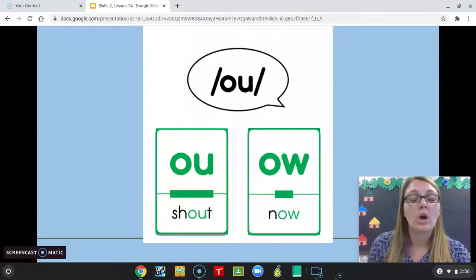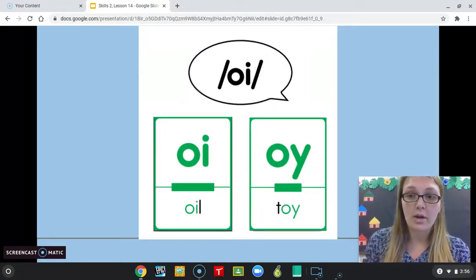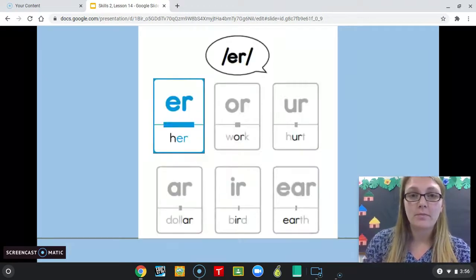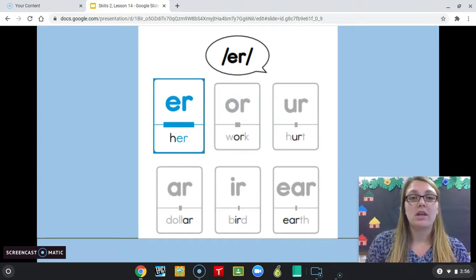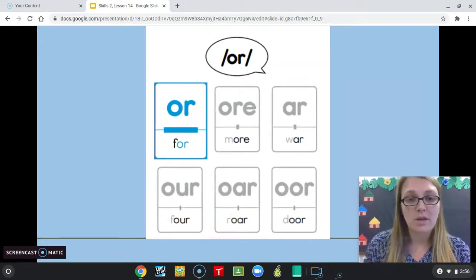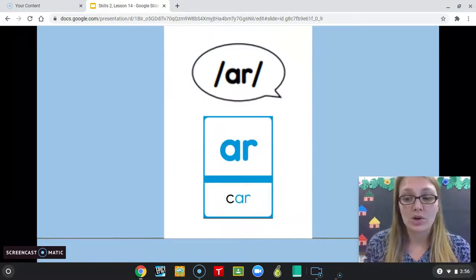And we have two spellings for OW: OU and OW. Two spellings for OI: OI like in oil, and OY like in toy. ER - we have ER, the most common spelling. OR, the most common being OR. AR, the only spelling is AR.